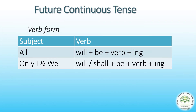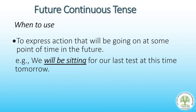The verb form of future continuous tense is: 'will' plus 'be' plus verb plus -ing. For the subject I and we, 'shall' can also be used instead of 'will.' Future continuous tense is used to express an action that will be going on at some point of time in the future, like the sentence example: 'We will be sitting for our last test at this time tomorrow.'